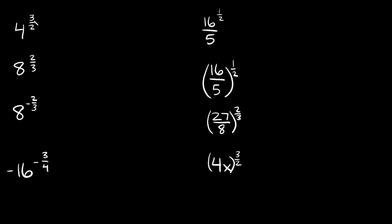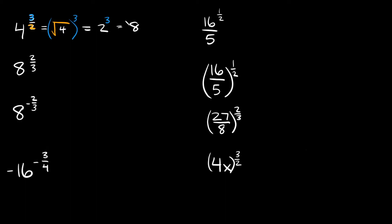Here we have 4 raised to the 3-halves power. Since we have a 2 in the denominator, we take the square root of 4, then raise it to the third power because of the 3 in the numerator. The square root of 4 is 2, and 2 cubed is 2 times 2 times 2, which equals 8. So 4^(3/2) = 8.